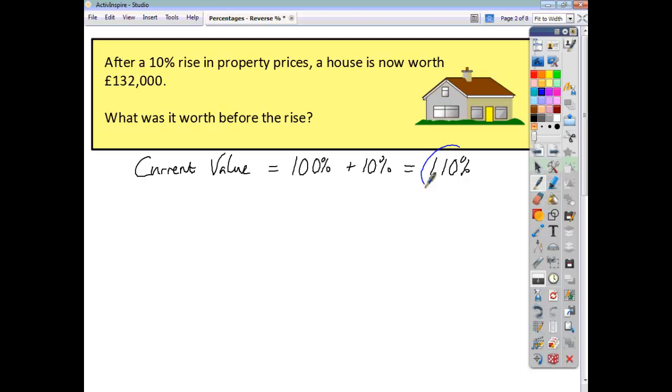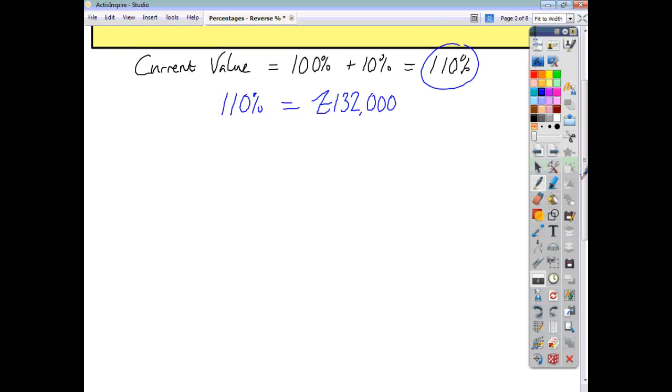Now, so we know that 110% is what we have here. We'll see 110% is equal to £132,000. Now, what are we wanting to do? We're wanting to work out the original value. We're wanting to work out 100%.